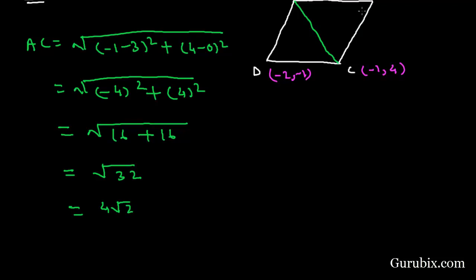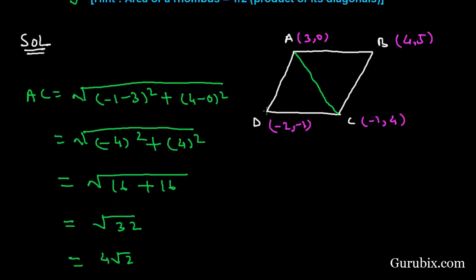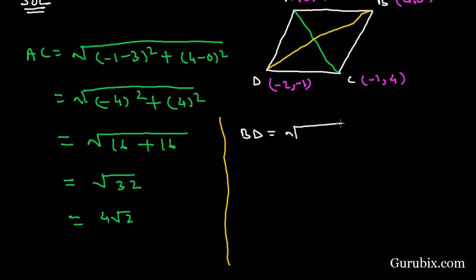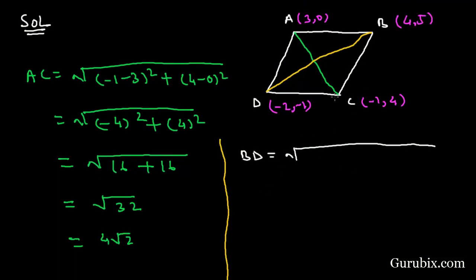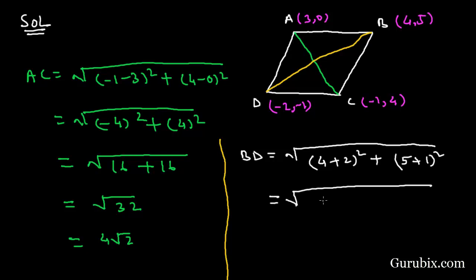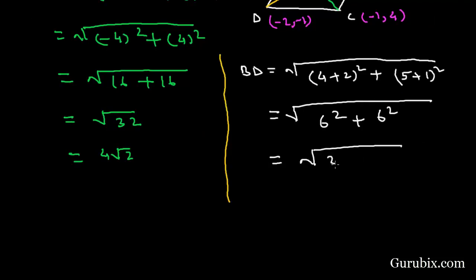Now we shall find the other diagonal BD. Applying the distance formula, BD equals the square root of (4 + 2)² + (5 + 1)², which equals the square root of 6² + 6², that is 36 + 36, which equals the square root of 72, giving us 6√2.